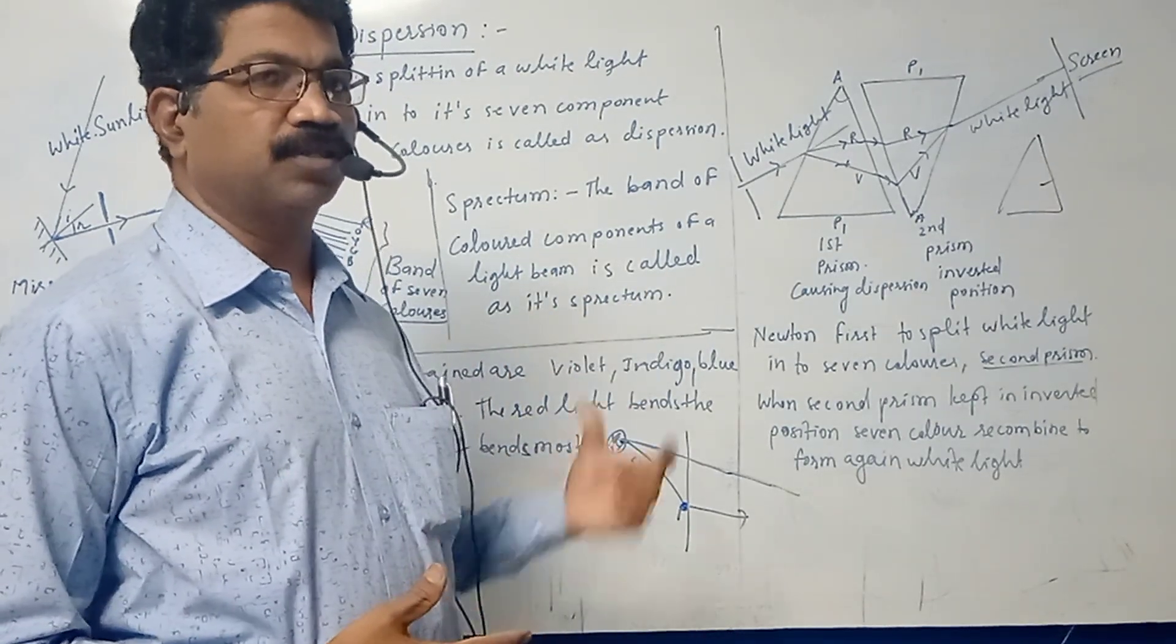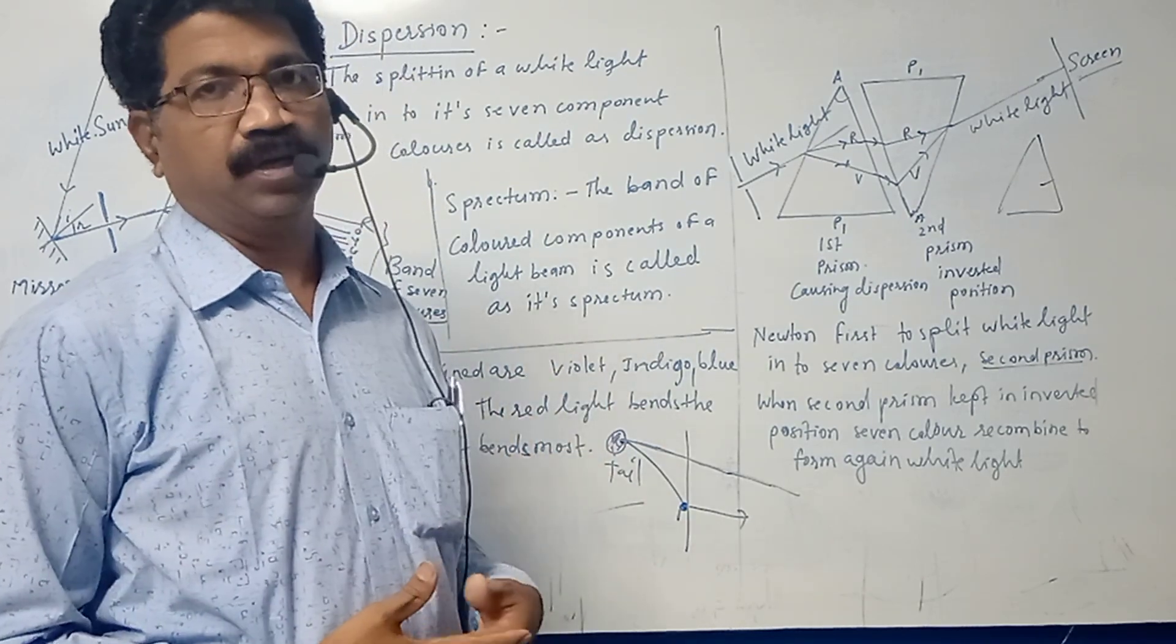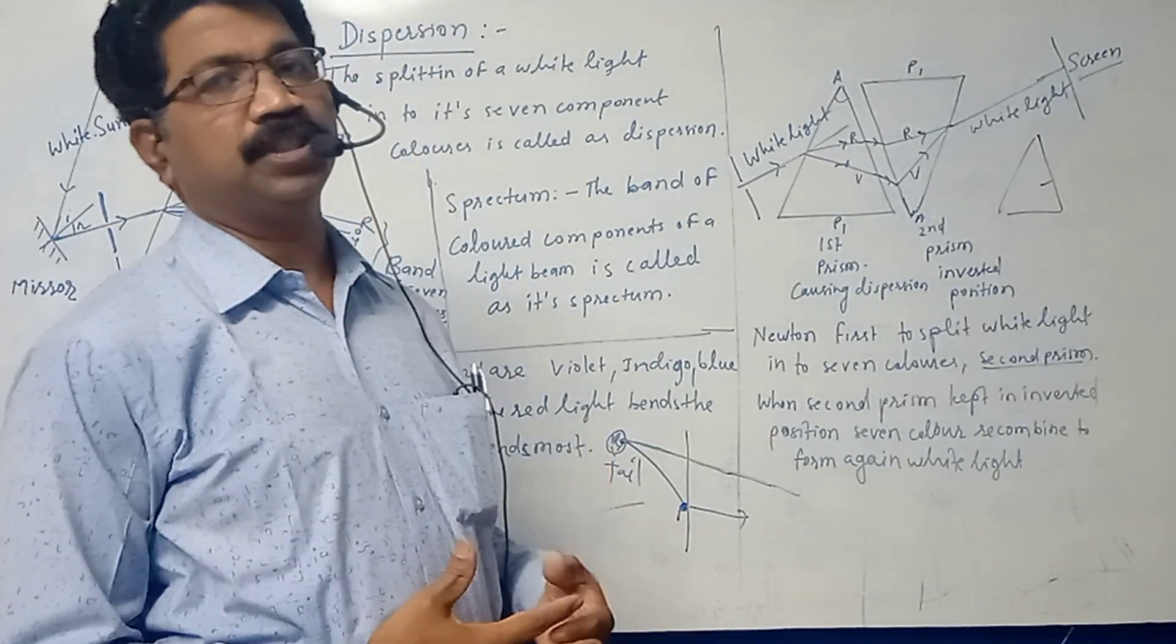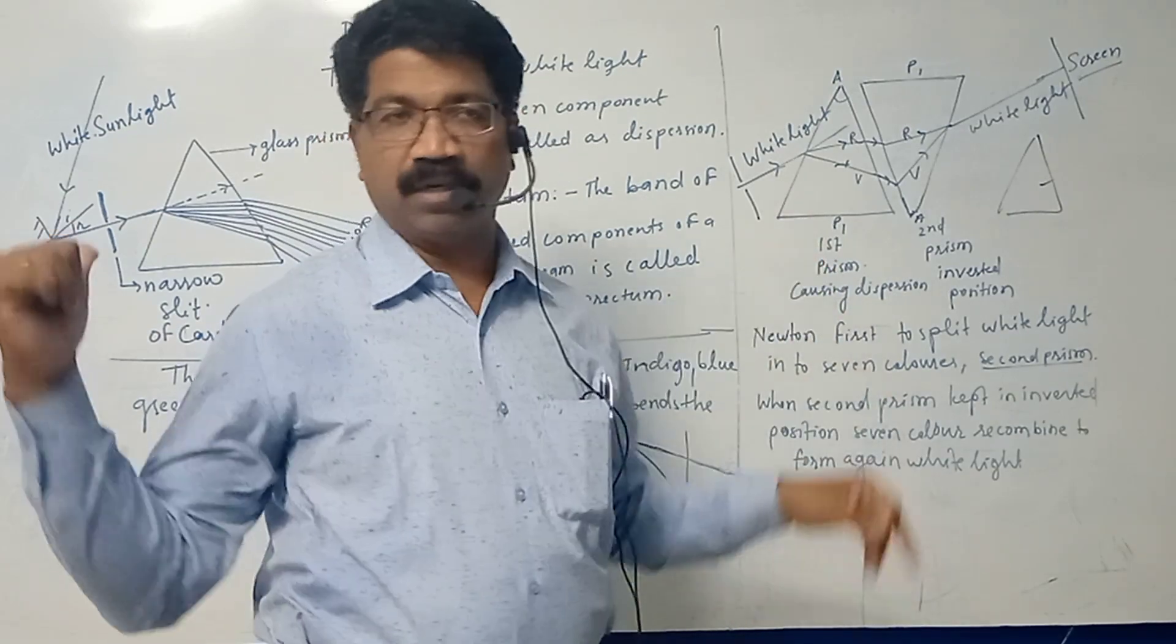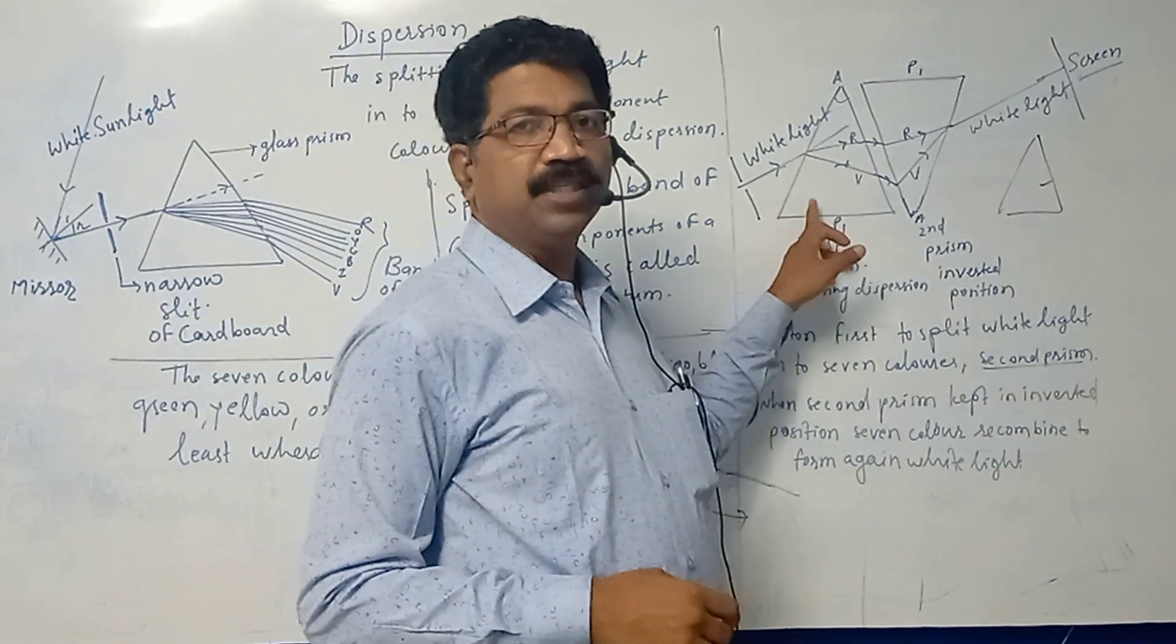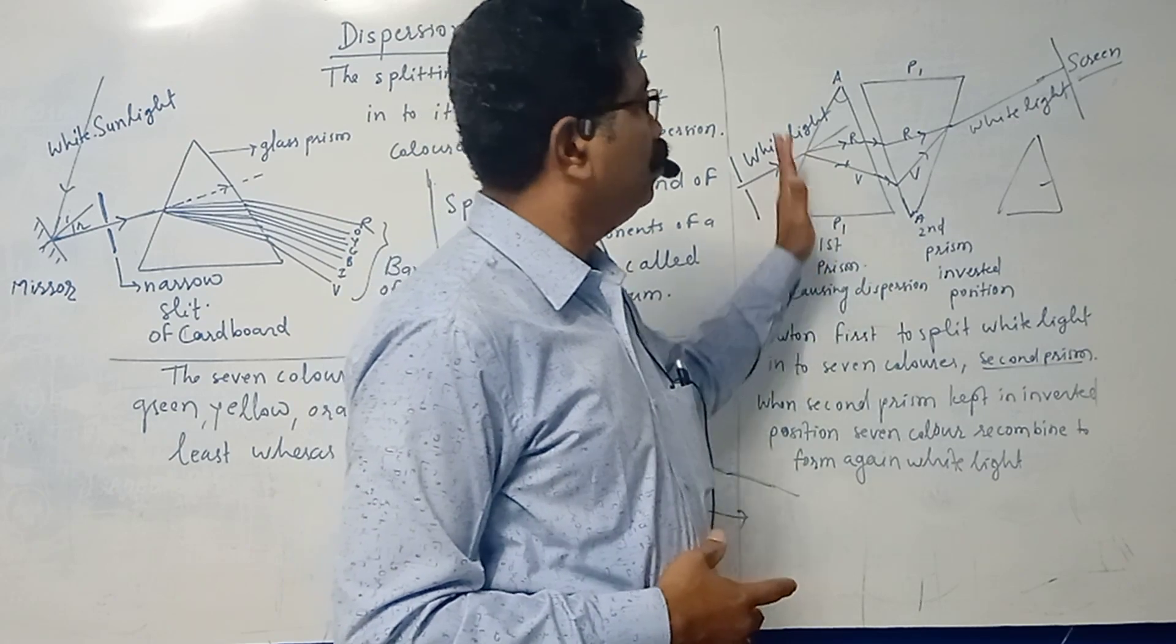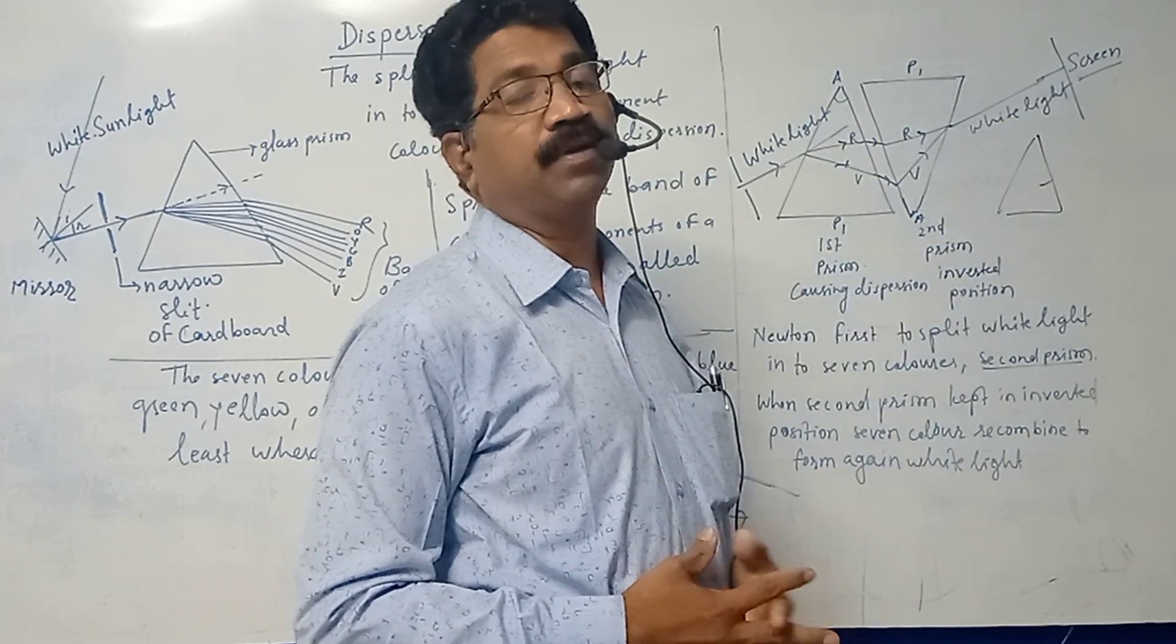Who discovered this phenomenon first? This was first discovered by Newton. Newton arranged a prism as we have discussed in this activity. When white light passed through the prism, it split up into seven colors. Then he put the next prism in the path, but the seven colors were maintained there.